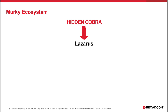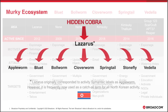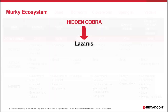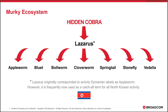Lazarus is the actor name most publicly linked to North Korea. It originally corresponded to a group that we call Apple Worm, but more recently it has tended to be used as a catch-all name for all North Korea activity, used interchangeably with Hidden Cobra. We ourselves have identified seven distinct groups of activity that we would class as distinct groups linked to North Korea.